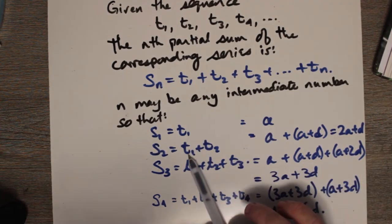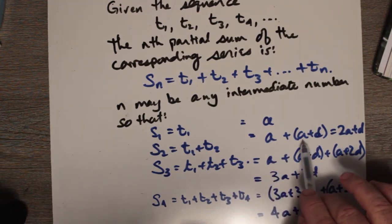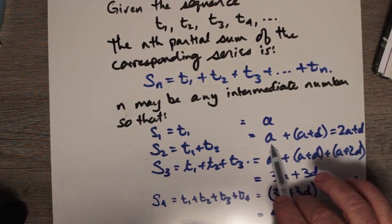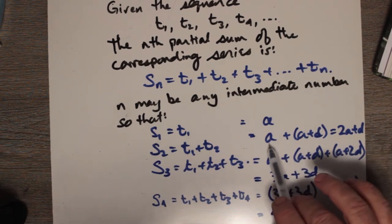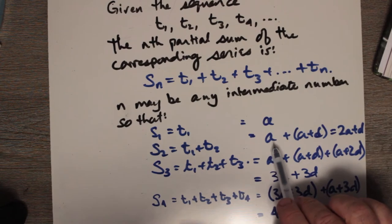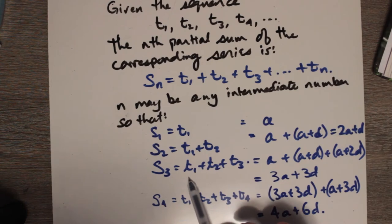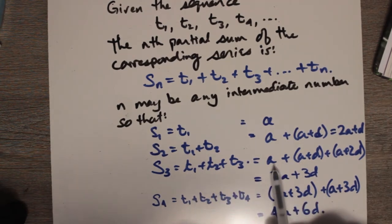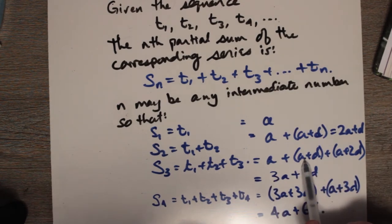Notice that when we were expanding these terms in an arithmetic series, t1 was simply a. If you recall, t1 plus t2 had a plus a plus d, so we ended up with 2a plus d. For S3, it's t1 plus t2 plus t3, so that's a plus a plus d for t2 and a plus 2d for t3, giving us 3a plus 3d.